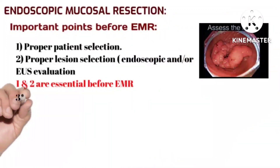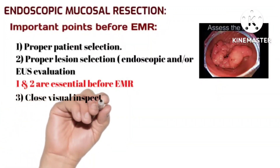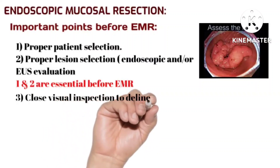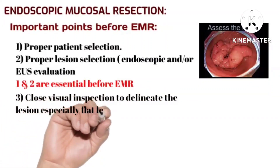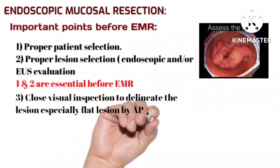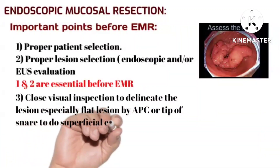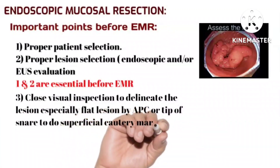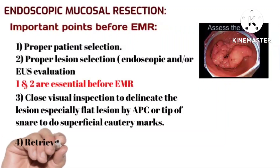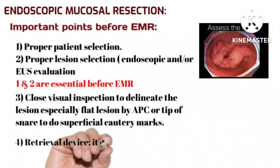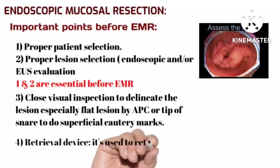The third important point is close visual inspection to delineate the lesion — especially flat lesions — using argon plasma coagulation or the tip of the snare to create superficial cautery marks. A retrieval device is used to retrieve endoscopic mucosal resection specimens.